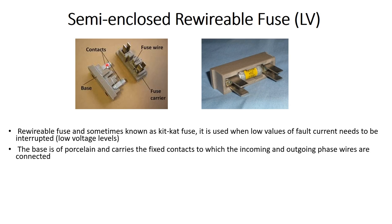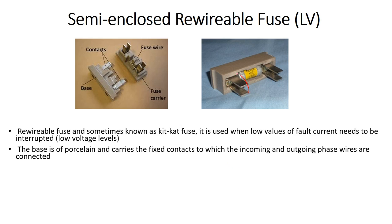It consists of a base with two contacts to which the incoming and outgoing phases are connected. Between them there is a fuse wire inside the carrier. We connect the incoming phase here and the outgoing phase here.